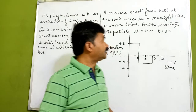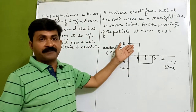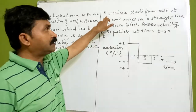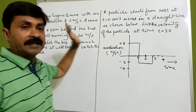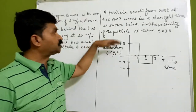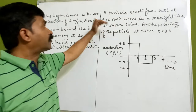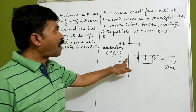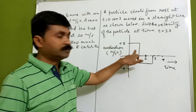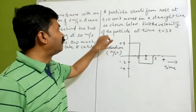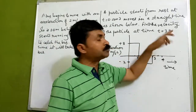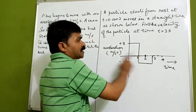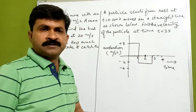We will go with the first numerical, which is graphical — based on the acceleration. The question is: a particle starts from rest at t equal to zero and moves in a straight line as shown in the figure. Find the velocity of the particle at time t equal to three seconds. We are given an acceleration-time graph.